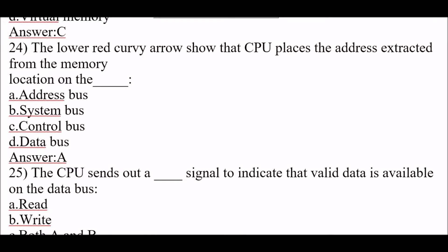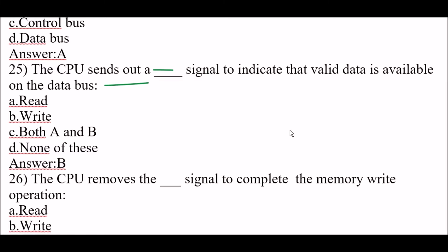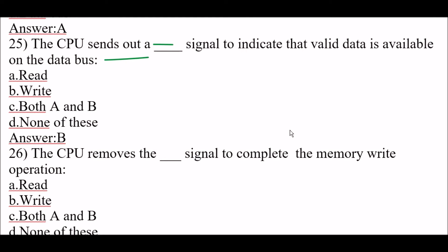Next question: the lower right curved arrow shows the CPU places the address extracted from the memory location on the address bus. The right answer is option A, address bus. Next question: the CPU sends out a blank signal to indicate that valid data is available on the data bus. The right answer is option B, write.